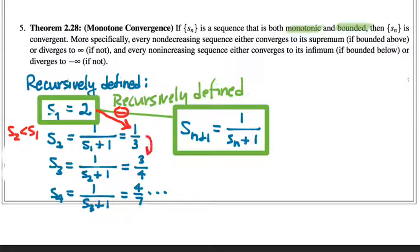But then, from the second term to the third term, it increases again. S3 is bigger than S2. So right away, for this particular recursively defined sequence, we don't have monotonicity. And so for this recursively defined sequence, we won't be able to use the monotone convergence theorem.